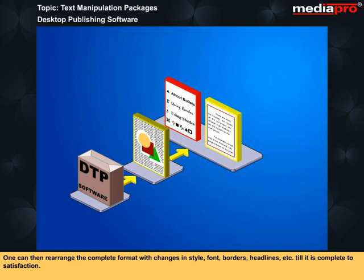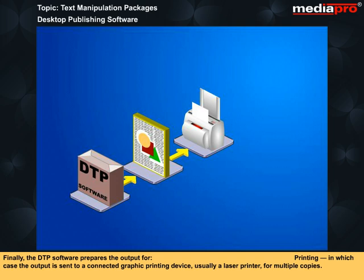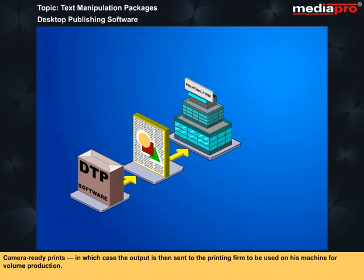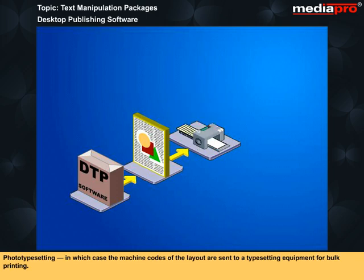One can rearrange the complete format with changes in style, font, borders, headlines, etc., till it is complete to satisfaction. Finally, the DTP software prepares the output for printing, in which case the output is sent to a connected graphic printing device, usually a laser printer, for multiple copies. Camera-ready prints, in which case the output is then sent to the printing firm for volume production. Photo-typesetting, in which case the machine codes of the layout are sent to a typesetting equipment for bulk printing.